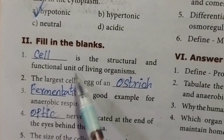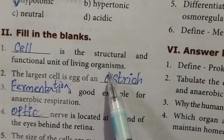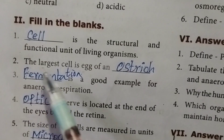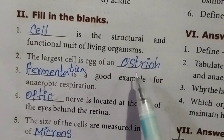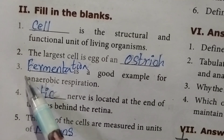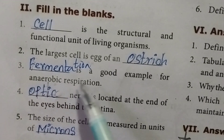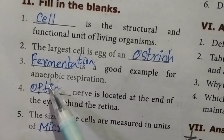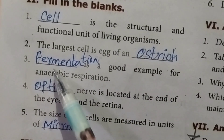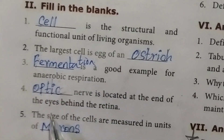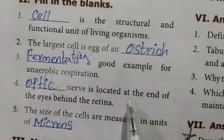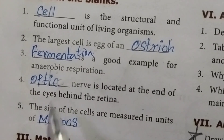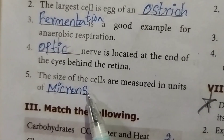Second one: the largest cell is the egg of an ostrich. Third one: yeast is a good example for anaerobic respiration or fermentation. Fourth one: the optic nerve is located at the end of the eyes behind the retina. Fifth one: the size of cells are measured in units of microns.